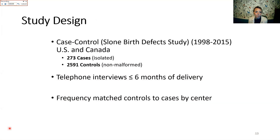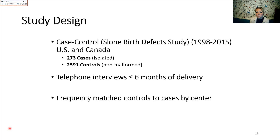For this study we used case-control data from the Sloan Epidemiology Center Birth Defect Study, which ascertained information on pregnancies occurring between 1998 and 2015 across several centers in the U.S. and Canada. We included 273 isolated gastroschisis cases and 2,591 non-malformed live-born infant controls born at the same centers. Data were collected through telephone interviews in English or Spanish with mothers within six months of delivery.